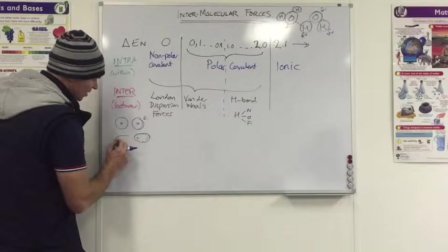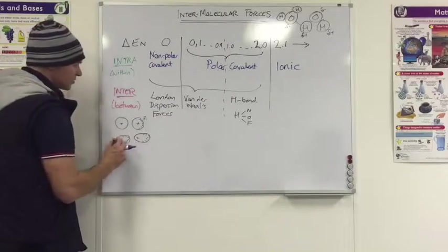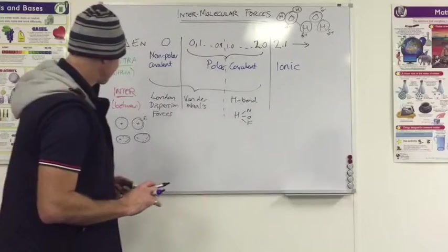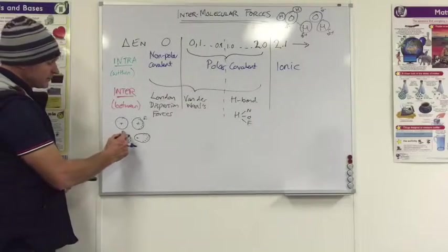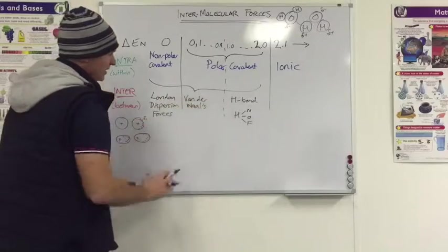Which then attracts the electrons of the first one. So just as it passes by, there's a very fleeting little temporary polarity that gets caused, and that results in a very tiny little intermolecular force, but nowhere near as strong as the others.